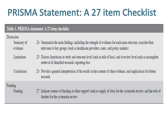Item 26 regarding conclusions is to provide a general interpretation of the results in the context of other evidence and implications for future research. Item 27 regarding funding is to indicate sources of funding or other support, such as supply of data, for the systematic review, and the role of funders for the systematic review.